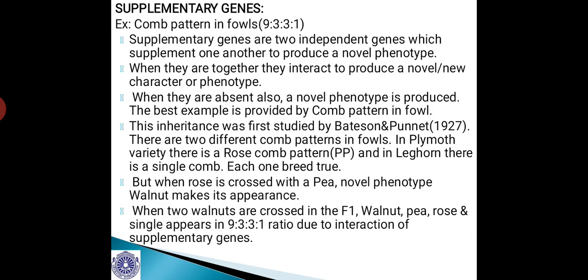There are two different comb pattern varieties in fowls. In the Plymouth variety there is a Rose comb pattern having a genotype of PP, and in the Leghorn there is a single comb — and each one breeds true, meaning they are true breeders. But when Rose is crossed with Pea, a novel phenotype called Walnut makes its appearance. And when two Walnuts are crossed in F1, Walnut, Pea, Rose, and single appears in a 9:3:3:1 ratio due to interaction of supplementary genes.